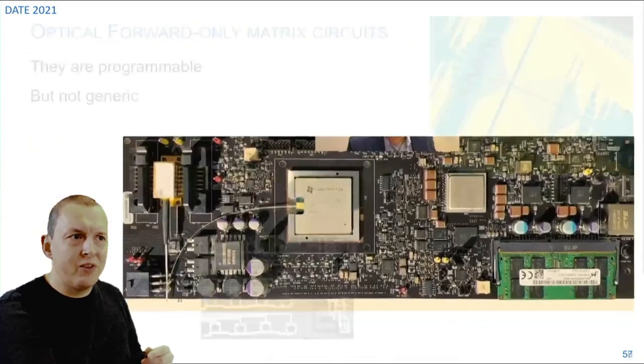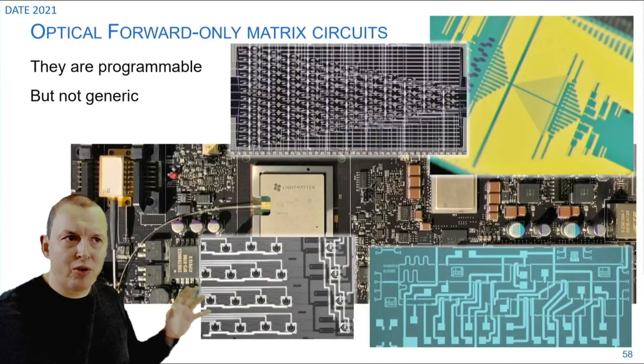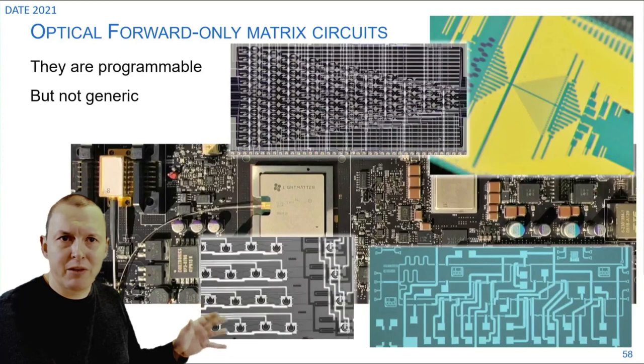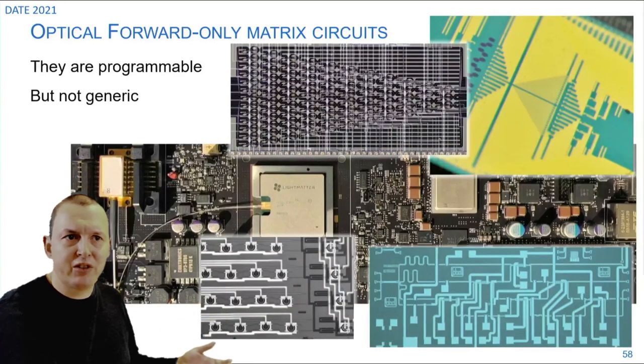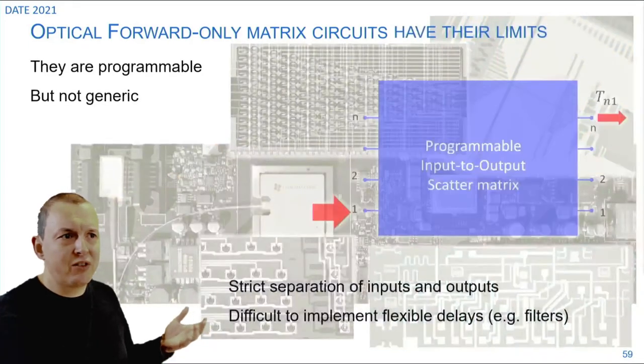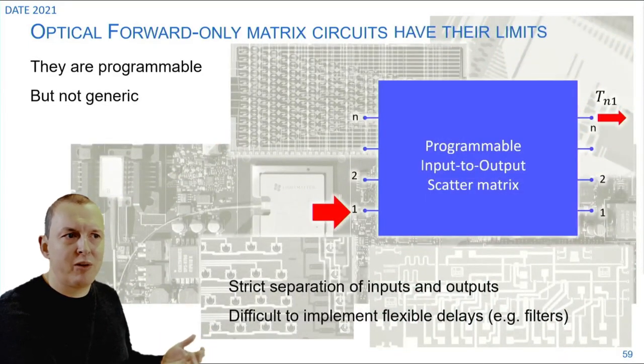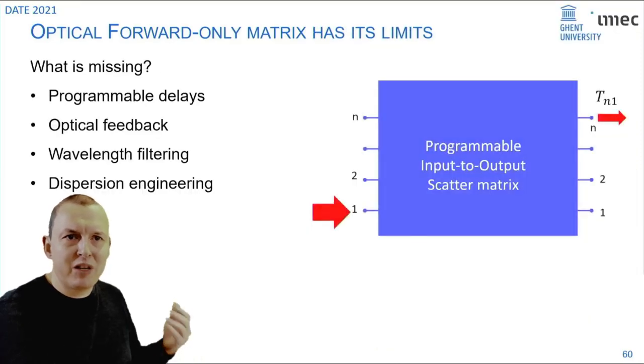Now these circuits are useful, they are programmable and they can do matrix arithmetics, but they're not generic. They're limited in what you can do. For instance you still have a strict separation of your inputs and outputs and it's very difficult to implement delays. What is really missing in these circuits is ways to provide delays, feedback and filtering all around.